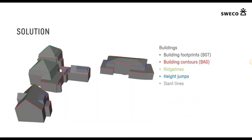We then focused on buildings and came up with a solution to map 3D buildings with more interesting and complex roof shapes. We considered many building types and concluded that what we need is: building footprints (already in the BGT), building contours from the BAG showing the top or bird's eye view, ridge lines measurable with various devices, height jumps so we don't have to draw vertical walls manually, and slant lines.